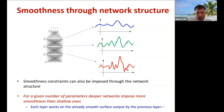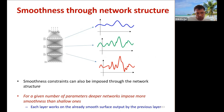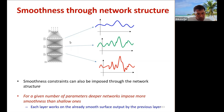It turns out we can also naturally get smoothness constraints from the structure of the network. For a given number of total parameters, deeper networks impose more smoothness constraints than shallow ones, because each layer works on the already smooth output of the previous layer. If the first layer learns a rough function, the next layer's output is already smoother, and the third layer learns an even smoother function. Simply by favoring depth over breadth, you can get smoothness.